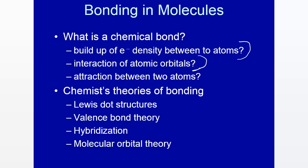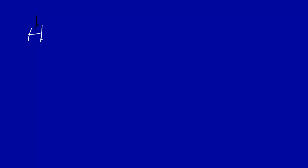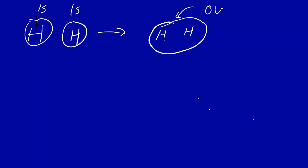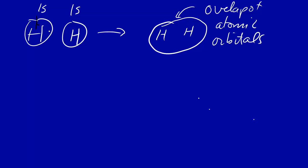How about the interaction of atomic orbitals? Well, that's something we perhaps learned in a previous course in chemistry. Here's a hydrogen atom, a hydrogen atom here, and a hydrogen atom here. We have 1 electron in the 1s of this hydrogen atom and 1 electron in the 1s of this hydrogen atom. As the bond forms, we have an overlap of the 1s orbitals — here's the hydrogen nucleus, nucleus here. So you might say this is an overlap of atomic orbitals. Interaction of atomic orbitals gives you a bond. Maybe that's a good description of chemical bonding.